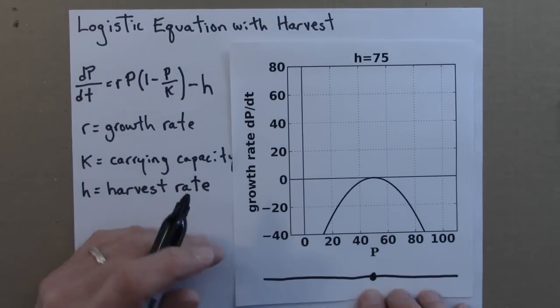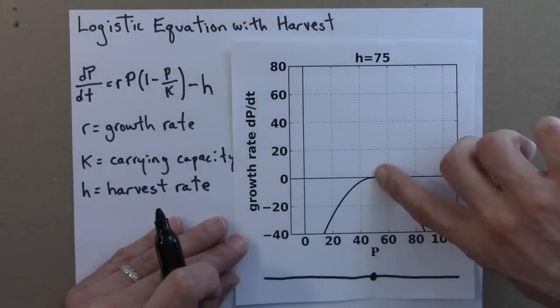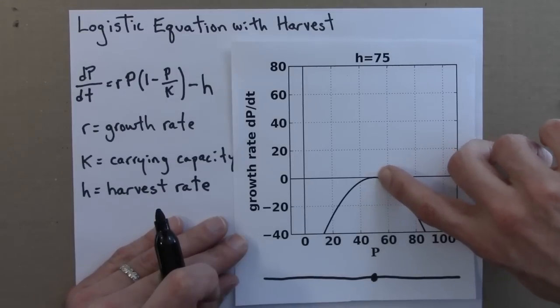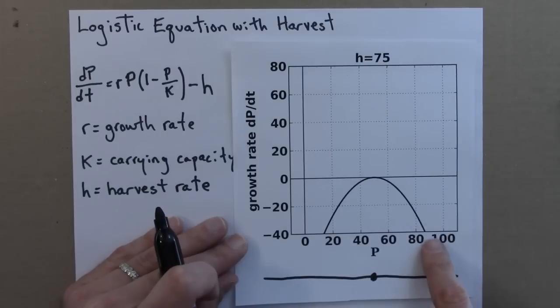Well now, there's only one fixed point. It occurs right here in the middle when we have 50 fish, a population of 50. If I'm above this, I decrease, and if I'm below this, I decrease.